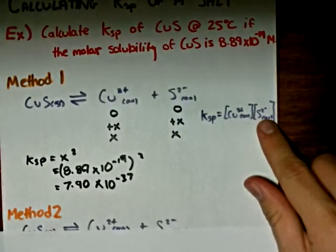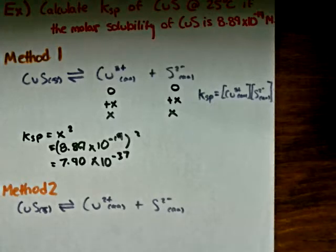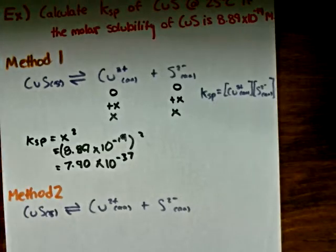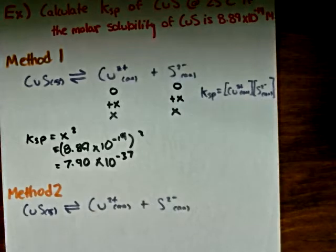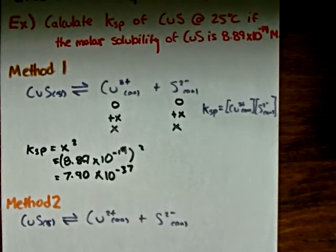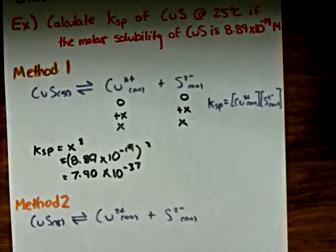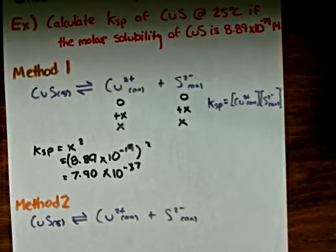The second method that I'll demonstrate involves a little more algebra. In this type of problem where we have a one-to-one ratio between the ions and the solid, an algebraic method will probably be much faster to use.